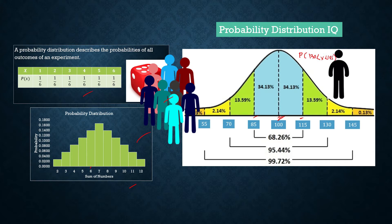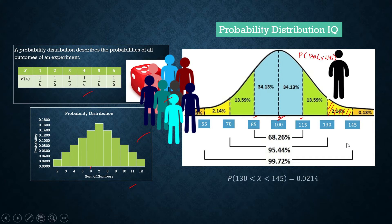The probability that the IQ is between 130 and 145 — we go to the Probability Distribution of IQ. The shaded region represents the probability that a randomly selected person would have an IQ between 130 and 145, and that equals 0.0214, or 2.14%.